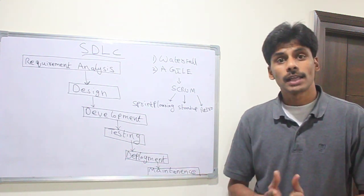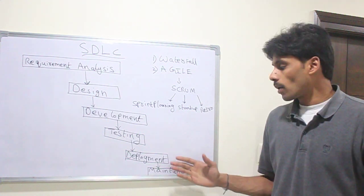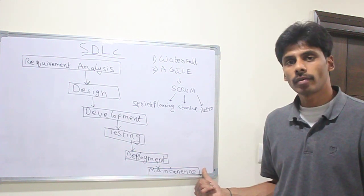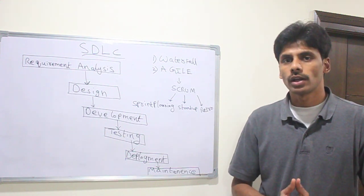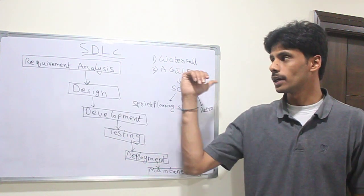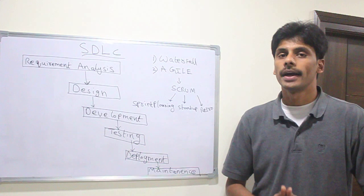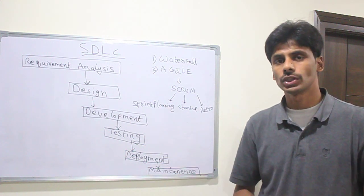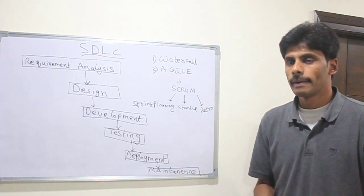Finally, the maintenance phase — this is where the support team, the technical support, comes into picture. Once the product is with the client, if there are any technical issues or errors, there will be a ticket from the client and the technical support team tries to address it first. If they can't resolve the issue, or if it is a feature that was missed out, it comes back to the analyst or the dev team to analyze and deliver it as a change request.